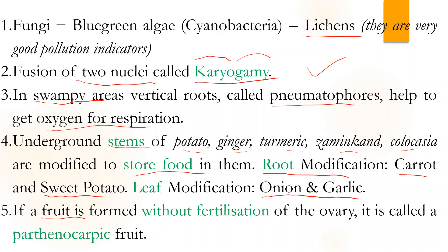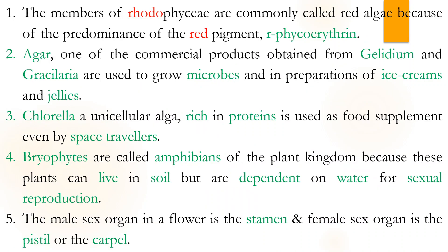If a fruit is formed without fertilization, that process is called parthenocarpy — without fertilization of the ovary, if the fruit forms.